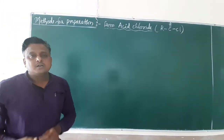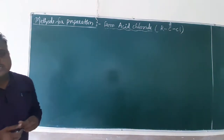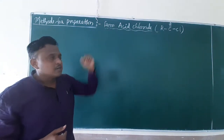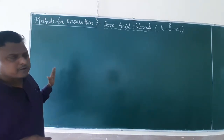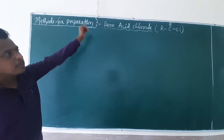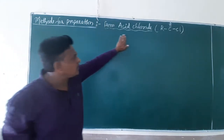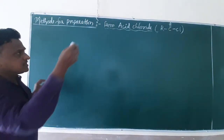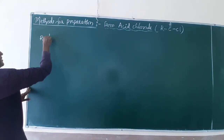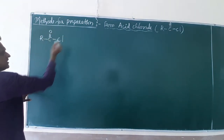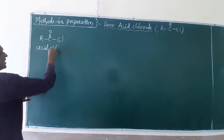Welcome everyone. Let us move on to the preparation of carboxylic acids — today, from acid chloride and acid anhydrides. This is very important for competitive examinations. The general formula of acid chloride is R-C(=O)-Cl.